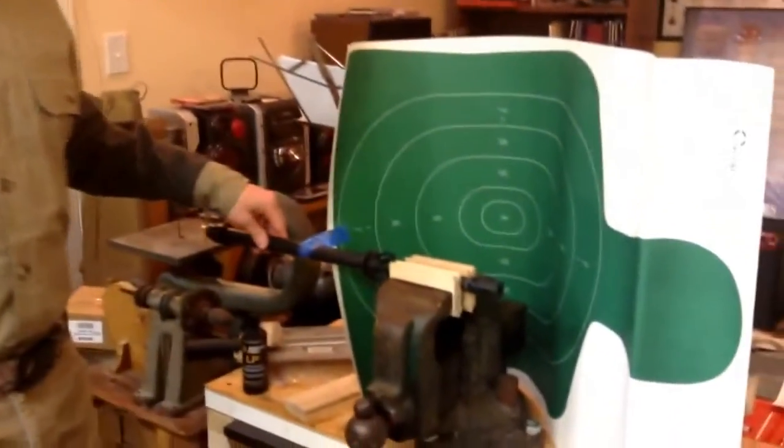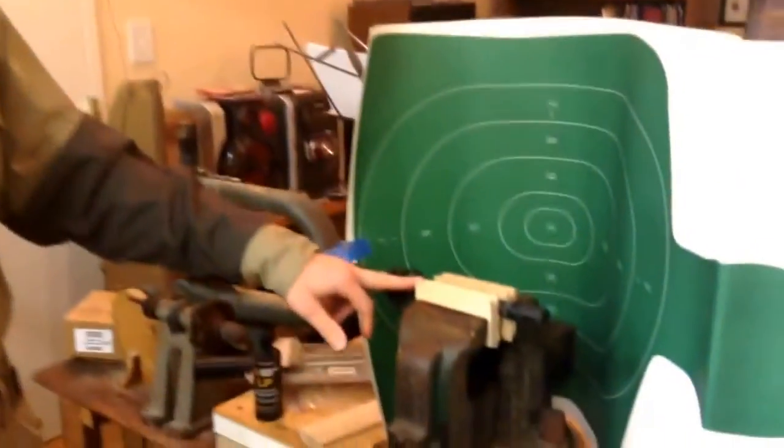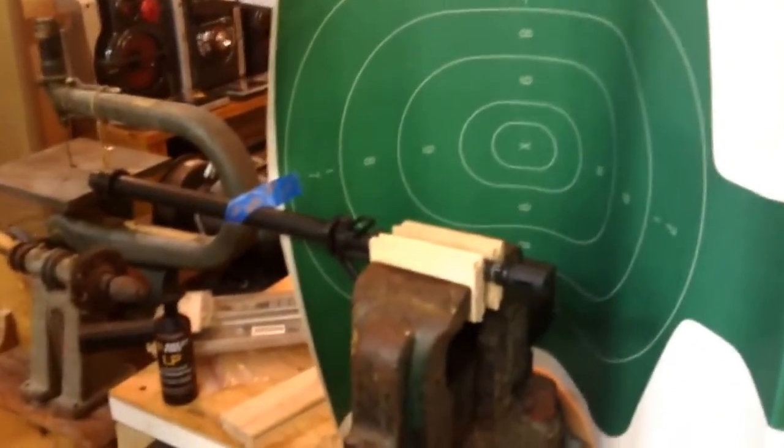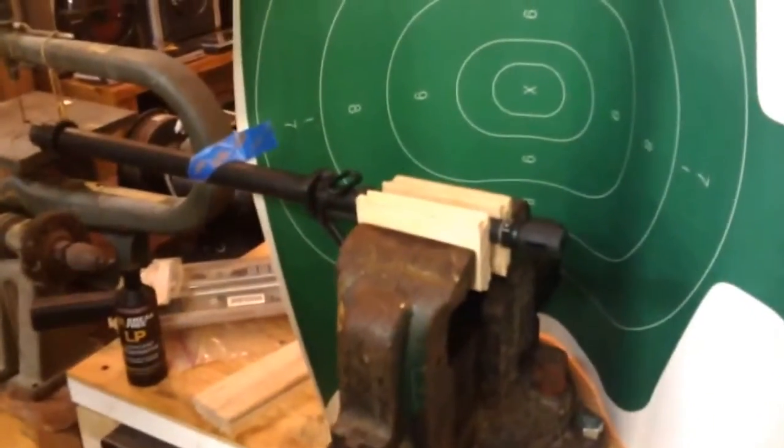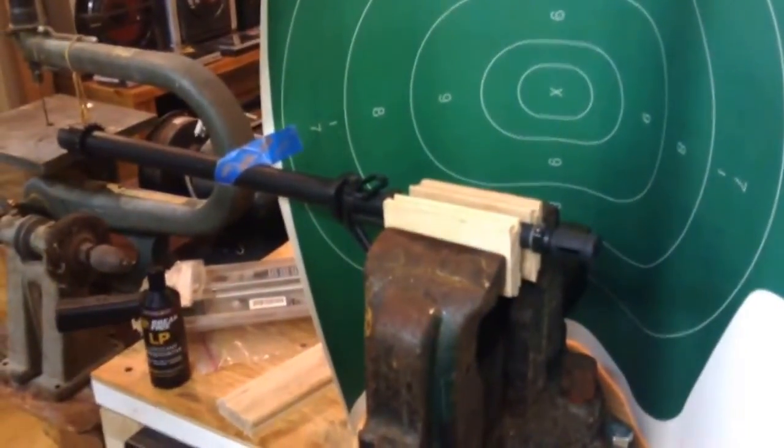So ever since then, I've had this extra barrel laying around with the assault weapon ban front sight base and this muzzle brake, and I decided that I might be able to get the muzzle brake off.